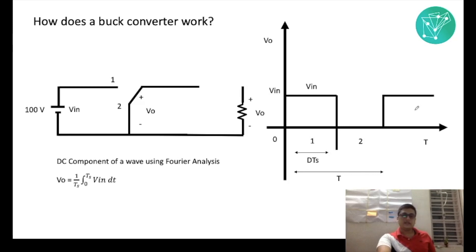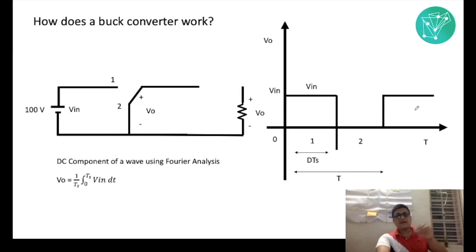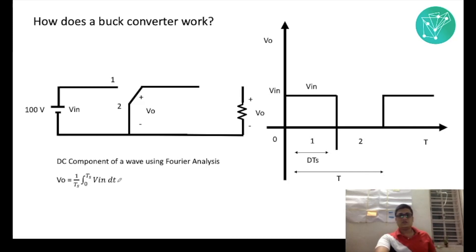So 1/Ts is the time interval, and we take the integral from 0 to Ts of V output dT. Now, evaluating this integral over the waveform we described — the output is V input for duration D·Ts and zero otherwise — the integral evaluates to D·Ts times V in.